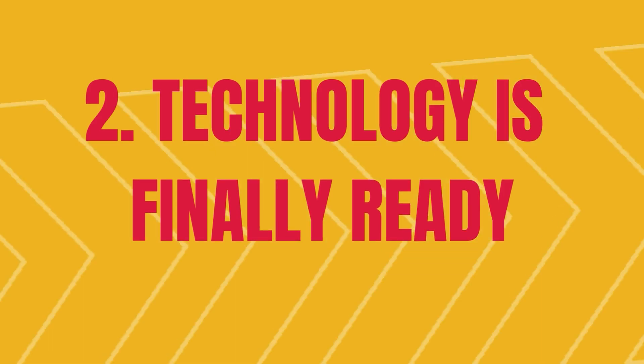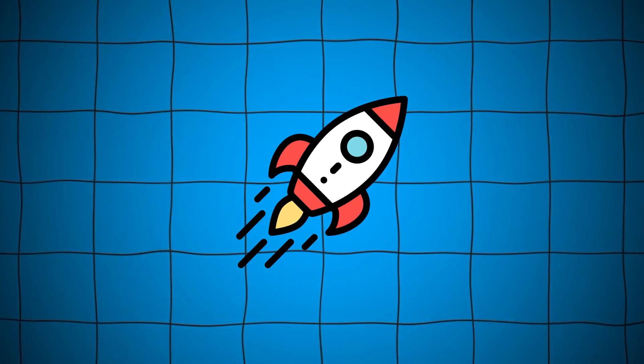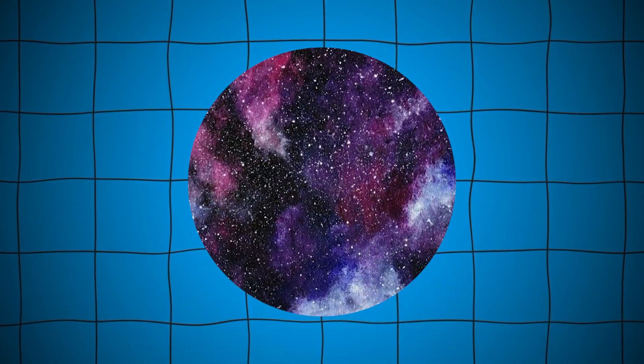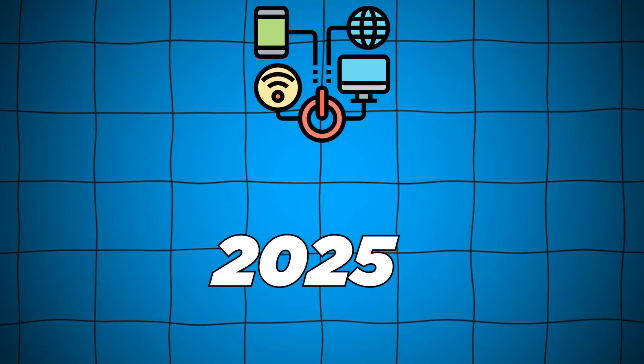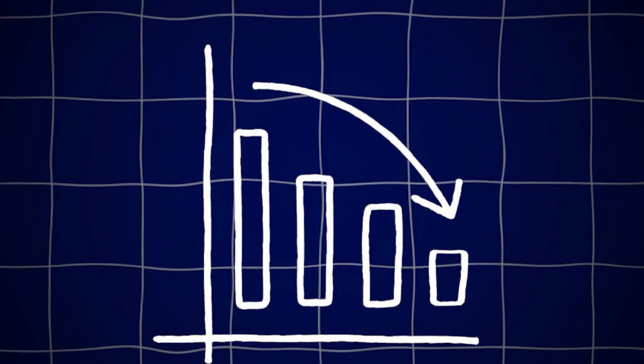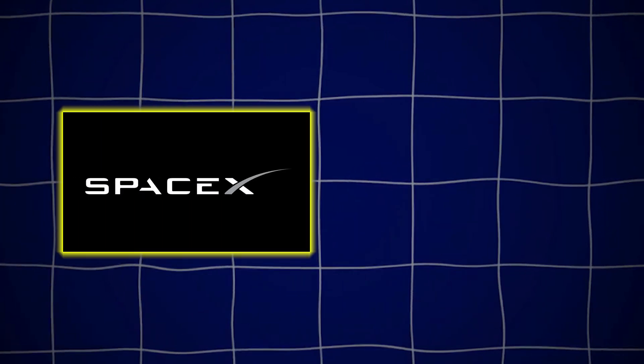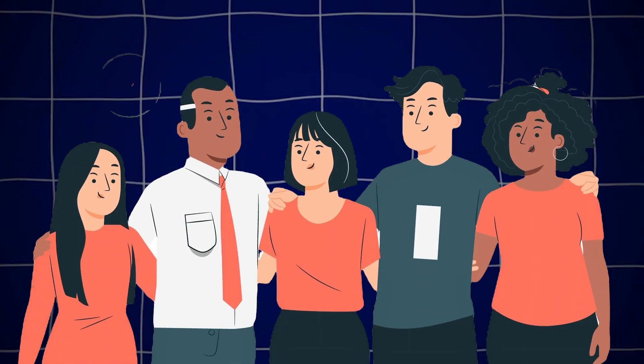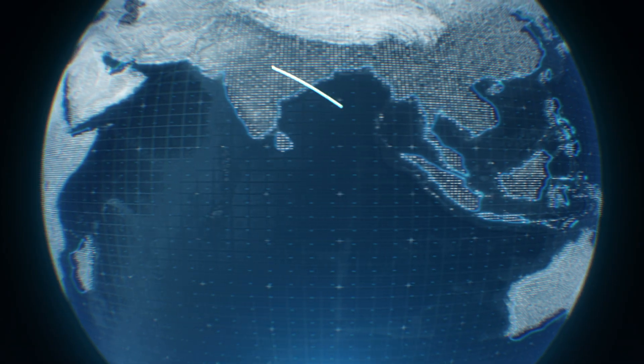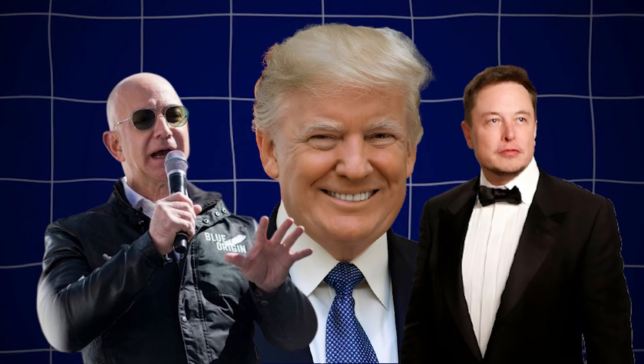Two, technology is finally ready. For decades, space travel was an endeavor reserved for government agencies like NASA. The technology was expensive, complex, and not necessarily reliable enough for private individuals to venture into space. But in recent years, advancements in technology have made space travel more feasible. The development of reusable rockets, improvements in spacecraft design, and the decreasing cost of space travel have opened up new possibilities. Musk's SpaceX and Bezos' Blue Origin have shown that it's possible to send humans into space without relying solely on government funding or involvement. With technology now able to handle the complexities of space travel, it's no wonder that these billionaires are focusing on expanding into space.